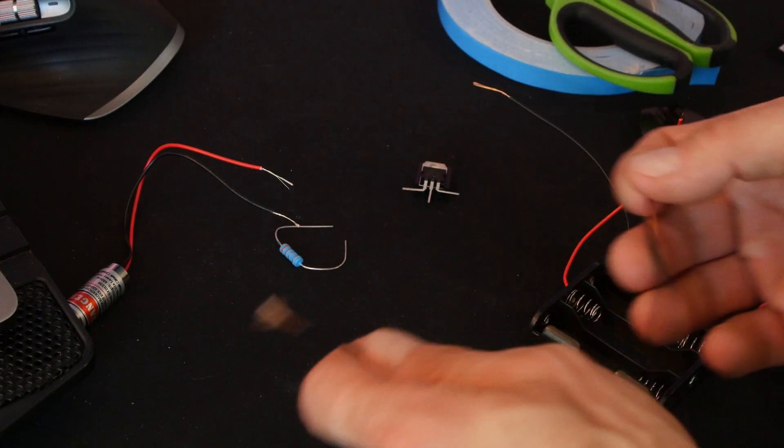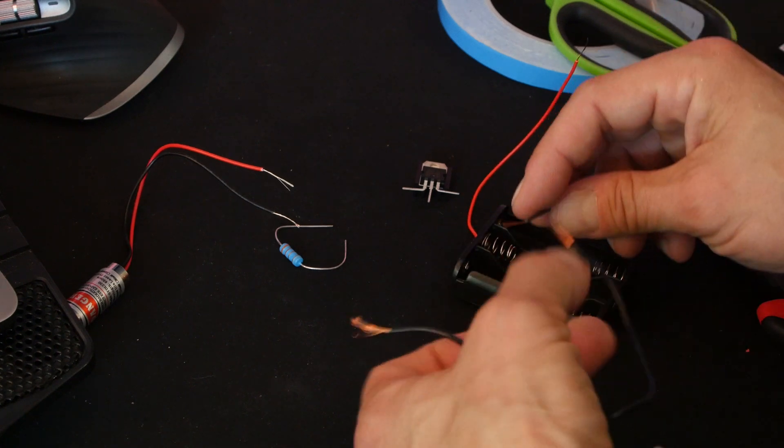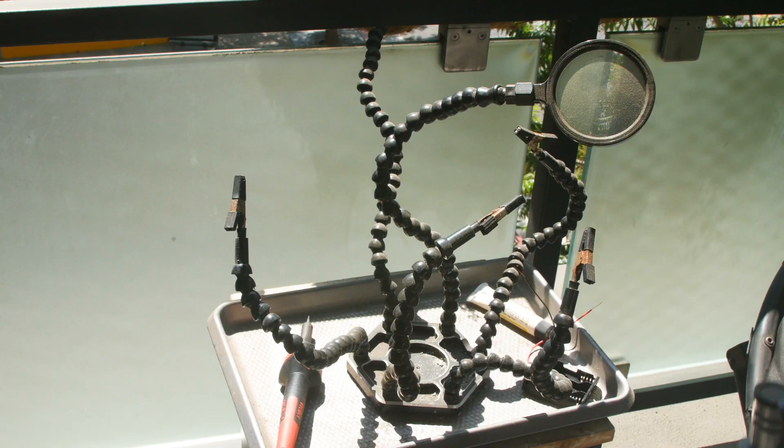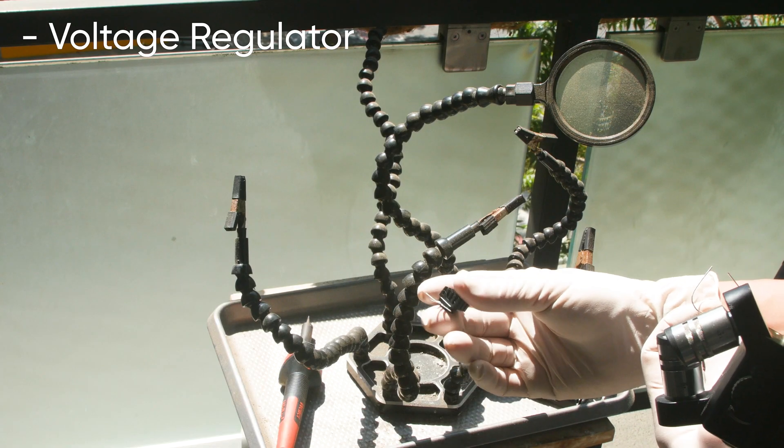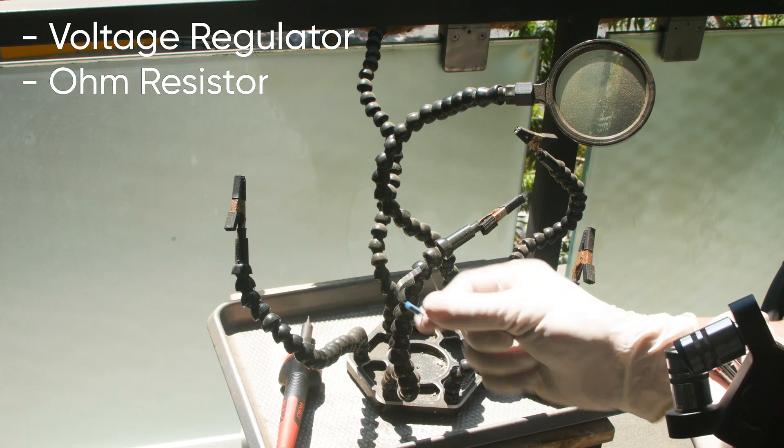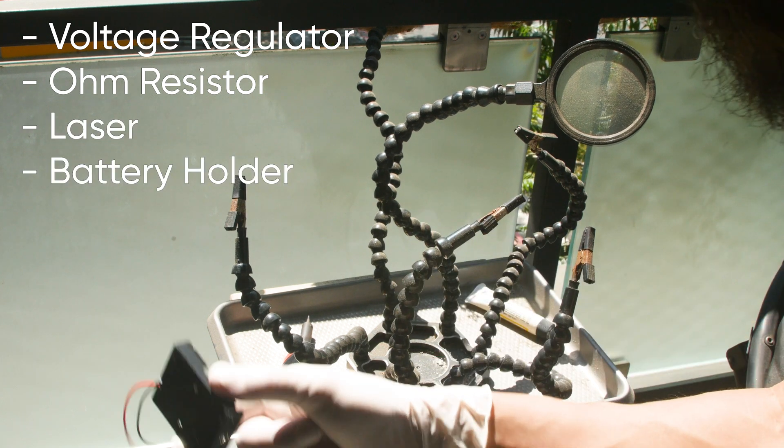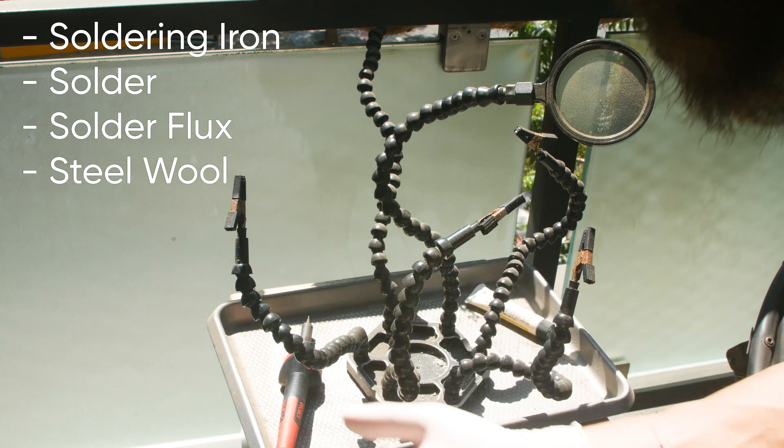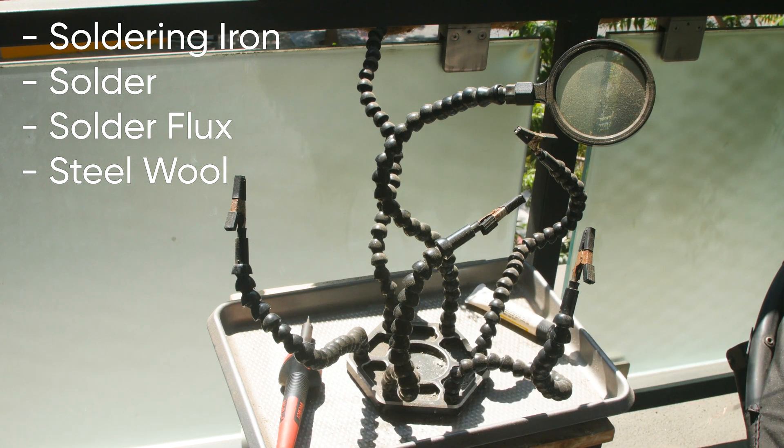Then after we're done with all of that, we're going to connect the switch just in between the black cable of the batteries and the black cable of the laser. Let's do it all together step by step. So the components you need are the voltage regulator, ohm resistor, the laser, and the battery pack, and of course you need the soldering iron, the solder, and the solder flux, all the things you're going to need in order to actually solder.